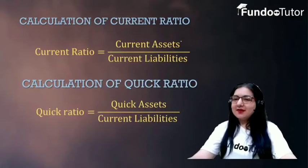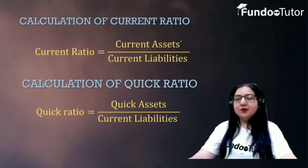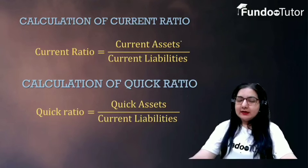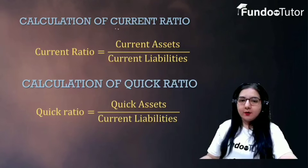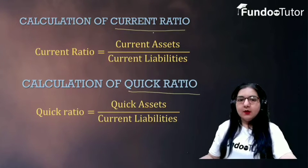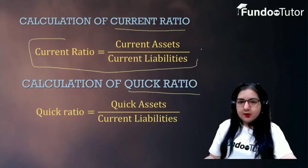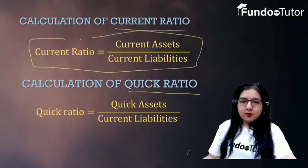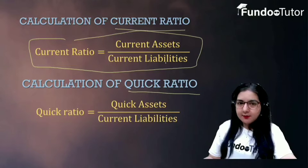Hello, my dear students. I welcome you to the Fundoo Tutor platform. In this video, I will explain how to calculate current ratio and quick ratio. To calculate current ratio, you need to apply this formula: current ratio is equal to current assets divided by current liabilities.